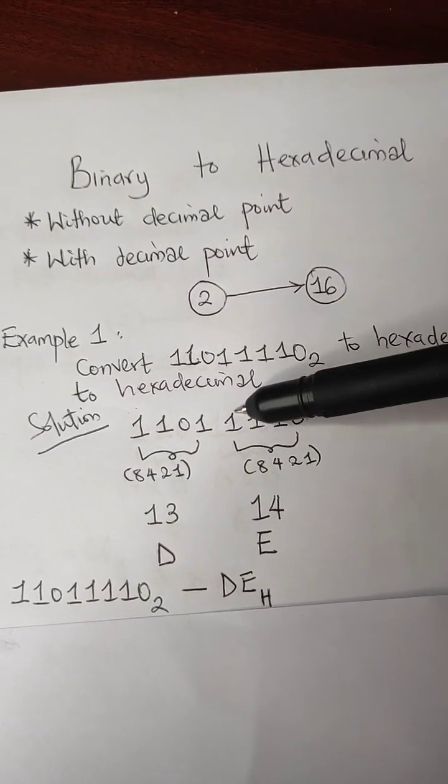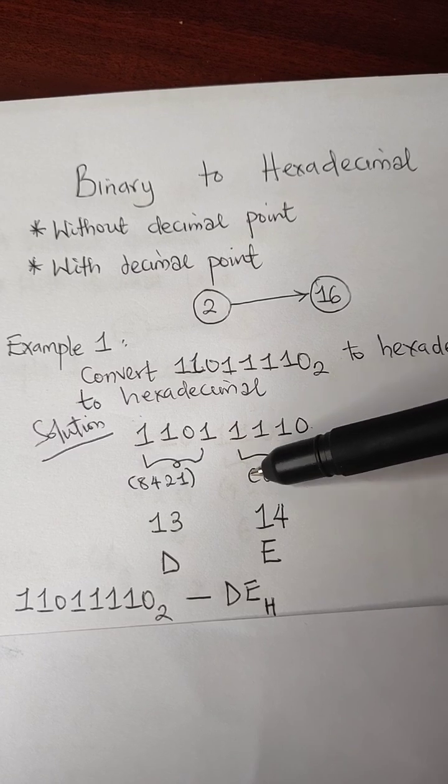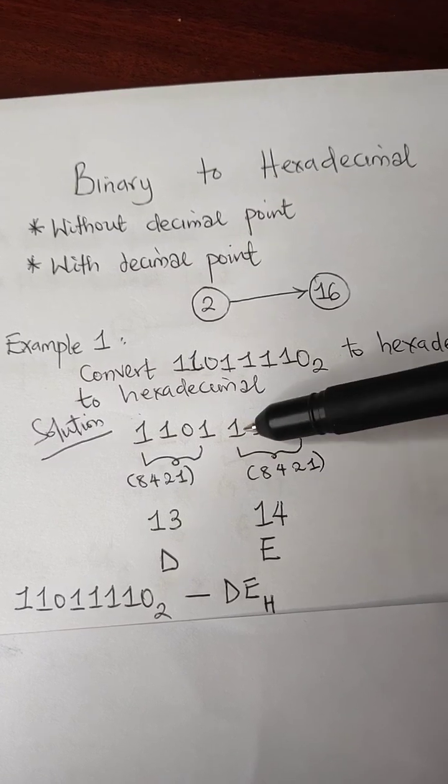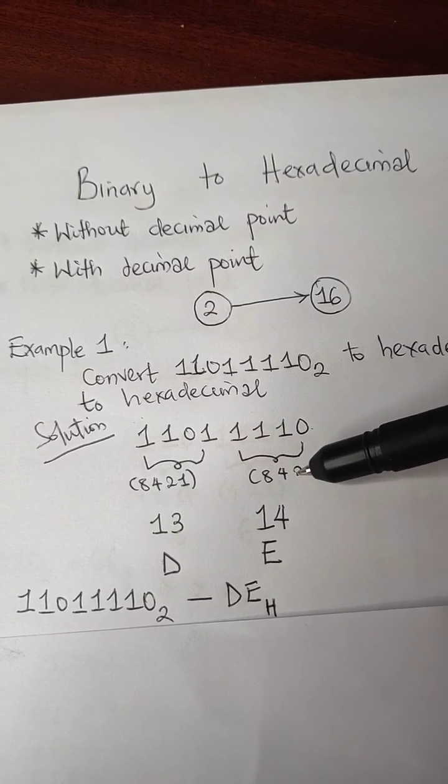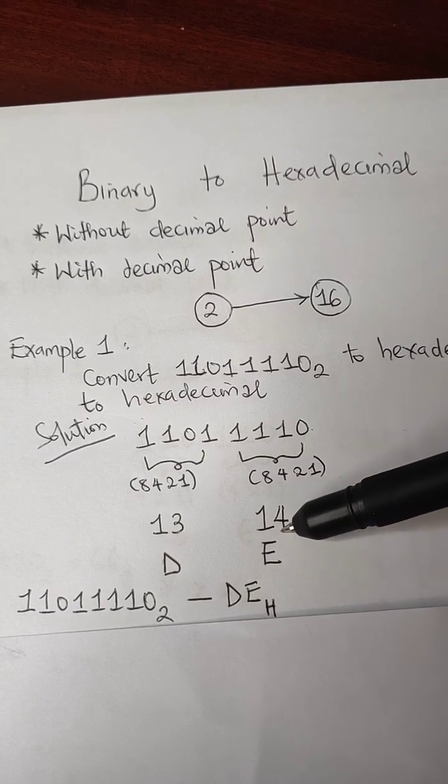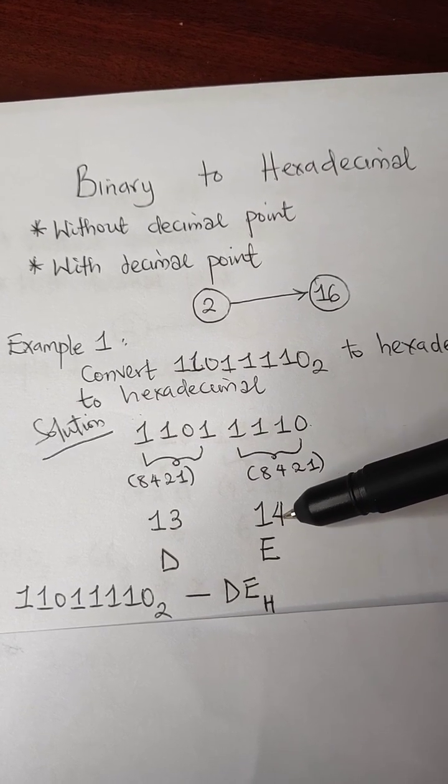The next thing I will consider is how many are on. Once I see 1, I go for the corresponding value. In this place, we have 8, 4, 2. I will sum that up as 14, and 14 in hexadecimal means E.